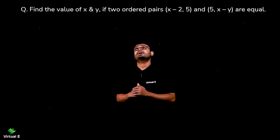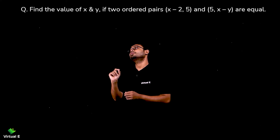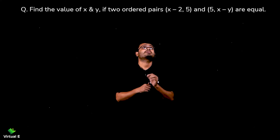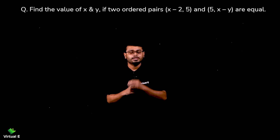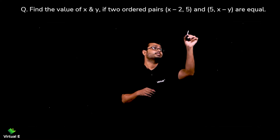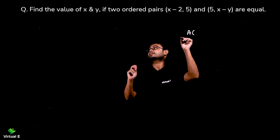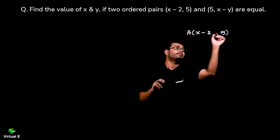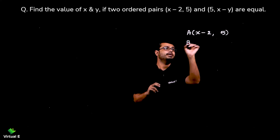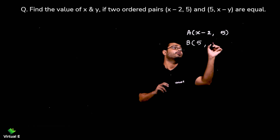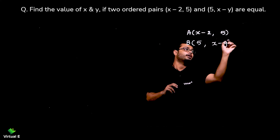Find the value of x and y if two ordered pairs (x minus 2, 5) and (5, x minus y) are equal. Let's name the first point A as (x minus 2, 5) and the second point B as (5, x minus y).